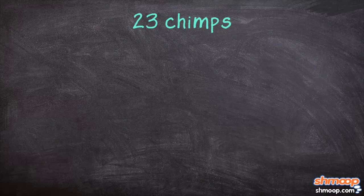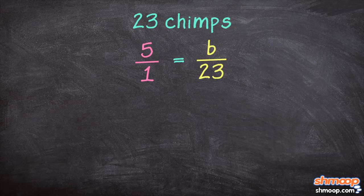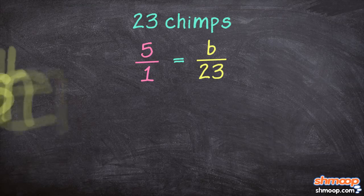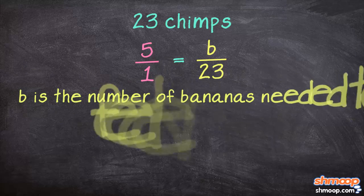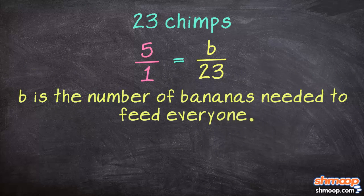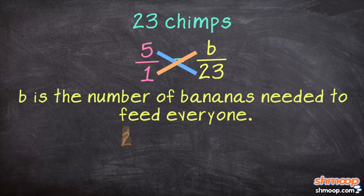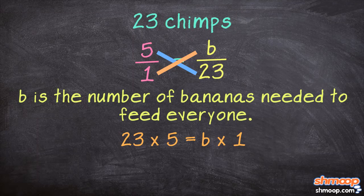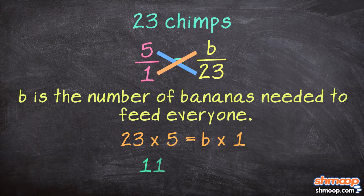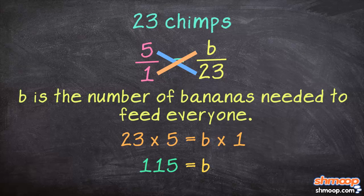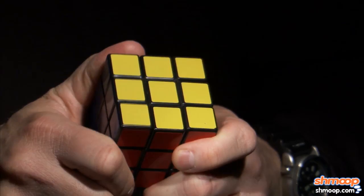we can show the equivalent ratios like this, where b is the number of bananas needed to feed everyone. Now we simply multiply on both sides of our equation to clear out the denominator. 23 times 5 is 115, and boom — we've got our answer.